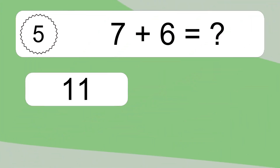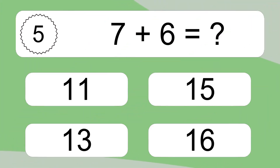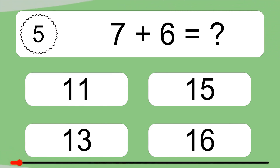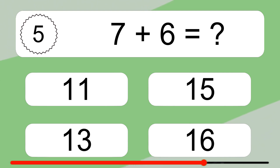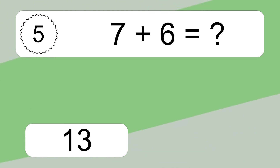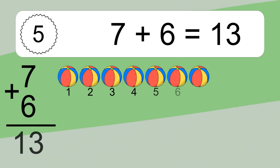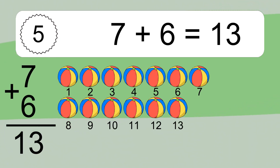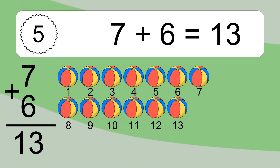7 plus 6 equals what? 7 plus 6 equals 13. Let's count it: 1, 2, 3, 4, 5, 6, 7, 8, 9, 10, 11, 12, 13.